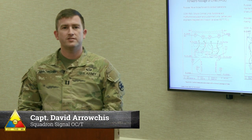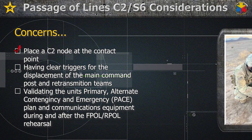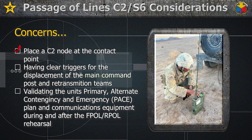The three main concerns for command and control during an FPOL or RPOL are: first, place a C2 node at the contact point to reduce friction between the adjacent battalion and the troops moving through the passage lane — the C2 node can be the tactical command post, or a smaller C2 node led by either the S3 or Operations Sergeant Major. Second, have clear triggers for the displacement of the main command post and retransmission teams — for example, 'when Alpha Troop displaces' is too vague because it can be interpreted as when Alpha Troop begins tearing down OPs or when they have initiated movement toward the passage lane. Third, validate the unit's pace plan and communications equipment during and after the FPOL and RPOL rehearsal.